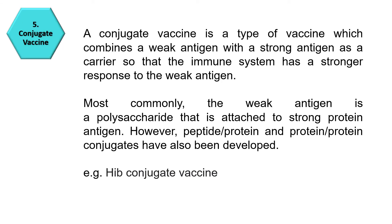A conjugate vaccine combines a weak antigen with a strong antigen as a carrier, so that the immune system has a stronger response to the weak antigen. Most commonly, the weak antigen is a polysaccharide attached to a strong protein antigen. However, peptide-protein and protein-protein conjugates have also been developed. An example is the Hib conjugate vaccine.